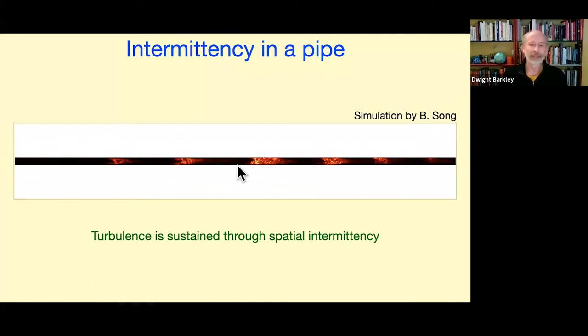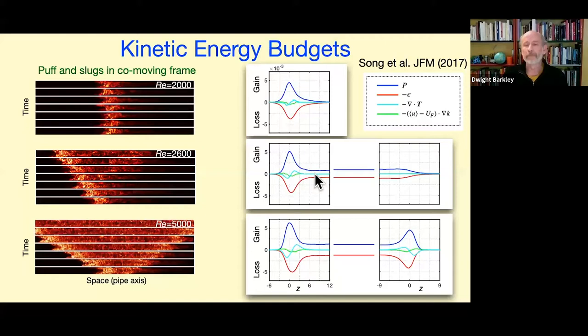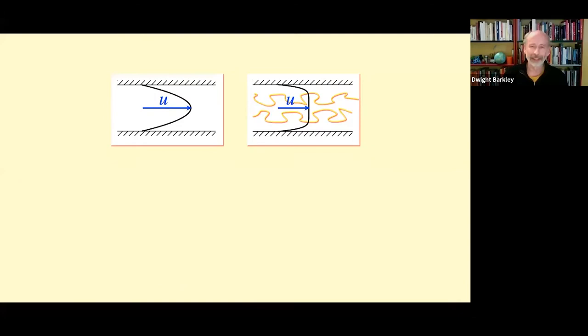From the paper Song et al., 2017 — this is Baofeng's thesis work — he analyzed these things very carefully. In space-time visualizations you can see a puff and two different kinds of slugs. You can see that the upstream front of the slug continuously deforms and becomes the puff. In terms of turbulent kinetic energy budgets, this is the budget of the upstream front — production and dissipation — and the core of the slug. Once you lose the equilibrium of the core of the slug, you remain with this upstream front, which is the puff.